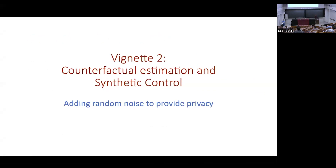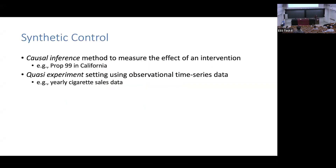We'll pause and change gears. Now let's talk about counterfactual estimation — the case where we have algorithms that are not random, we'd like them to be private, and we can add noise, hopefully without incurring too much additional error. The synthetic control problem is a causal inference method used to estimate the effect of an intervention — a quasi-experiment setting based on observational data in the form of a time series.